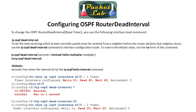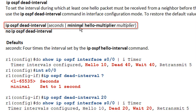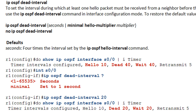The ip ospf dead-interval interface command is how you change the dead interval. This command changes the dead interval but will not affect the hello interval — it will not set the hello interval to one quarter of the dead interval. There is also an option for minimal hello multipliers, which enables OSPF fast hellos, allowing sub-second OSPF hellos. There will be a specific lesson on that.